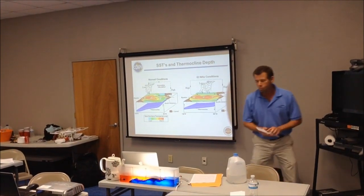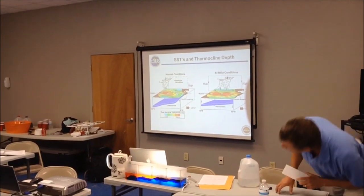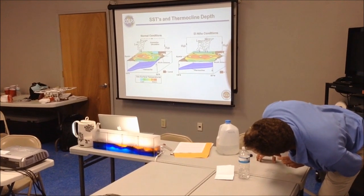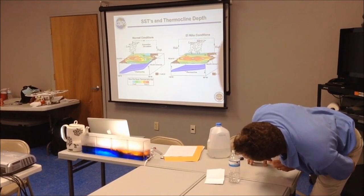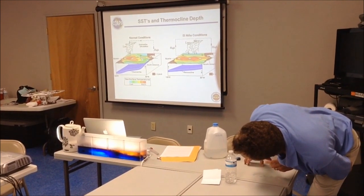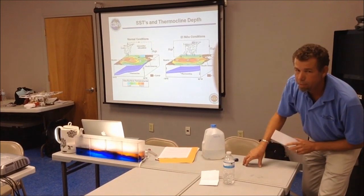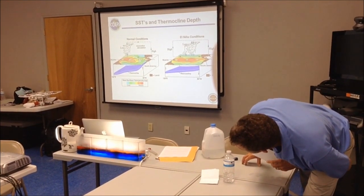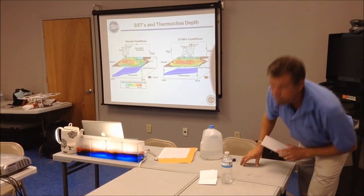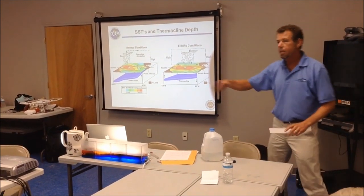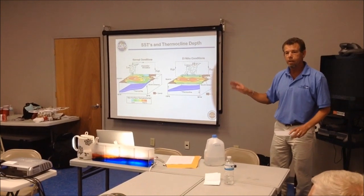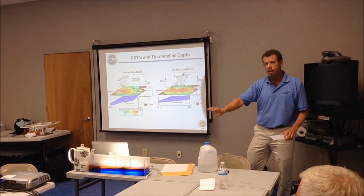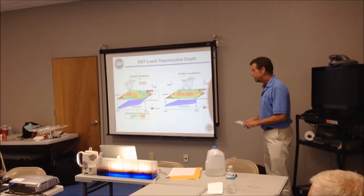Watch the warm water ride over the colder water. And it reaches the coast. See how the thermocline deepens. And then what's really cool is, it'll actually rebound. So that's what's known as a Kelvin wave — nothing on the surface of the ocean, not a breaking wave, but just a deepening of that mixed layer and the thermocline, which is the boundary between the two.